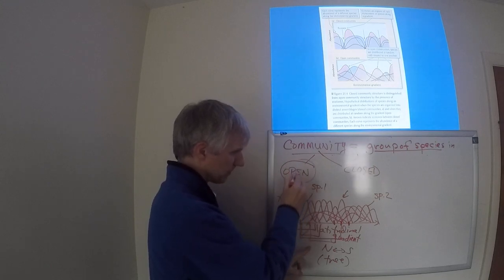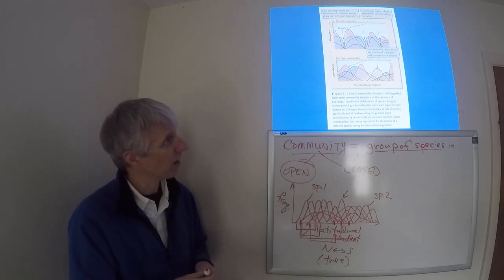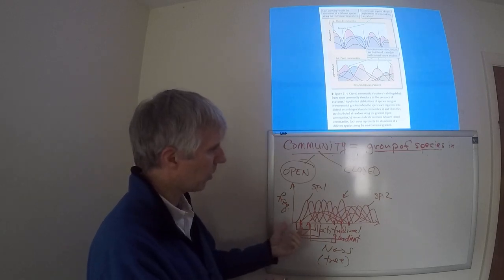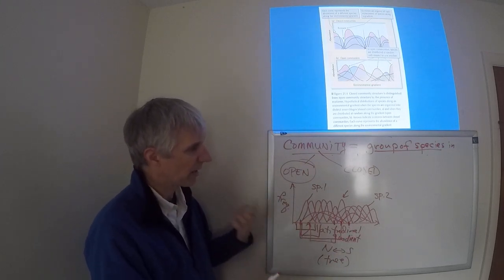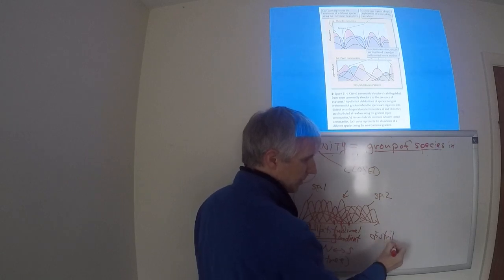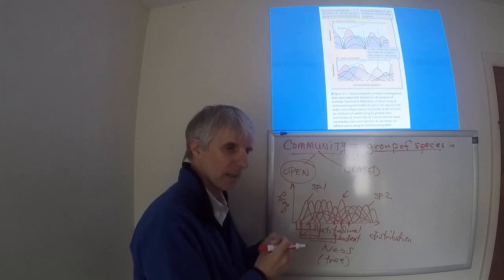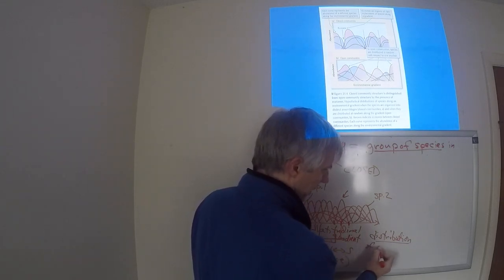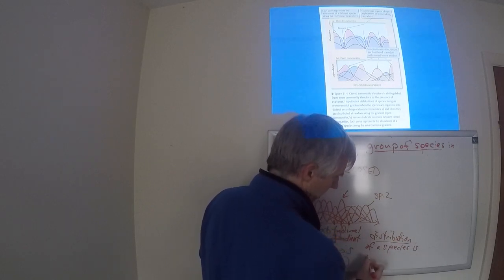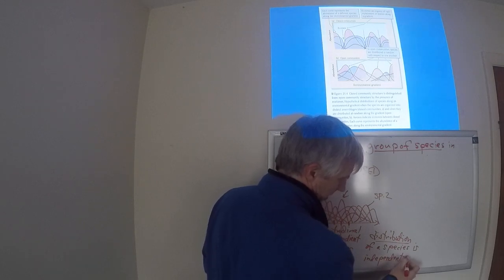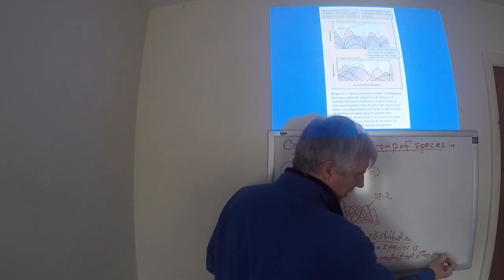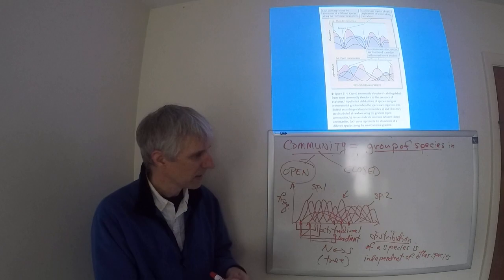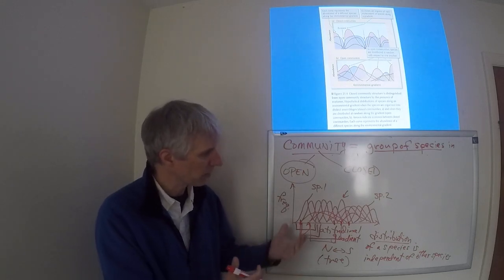This community type is referred to as an open community — there are no very specific boundaries. Another way to think about it: the spatial distribution of species is independent of each other. You can't use the distribution of one species to predict the distribution of any other species within the community, because they all have distributions that look very random with respect to each other.